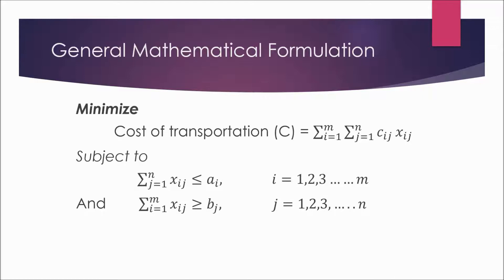The second constraint is on the demand side: the minimum demand is represented by bj, and the total demand — summation of xij — must be at least equal to bj or greater than bj. Finally, we have the non-negativity constraint: xij must be greater than or equal to zero.